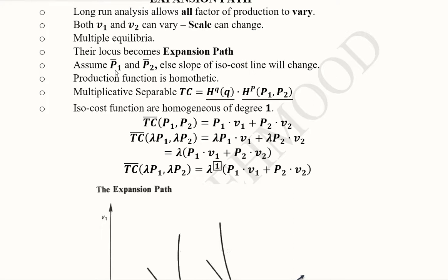Now we have to assume that P1 and P2 are constant. It will give us some stability in the isocost line. Otherwise, the slope of the isocost line will change, which will become something difficult for us to handle in this diagram where already multiple equilibria are to be plotted. So for the sake of convenience, we have assumed that P1 and P2 have fixed slopes.